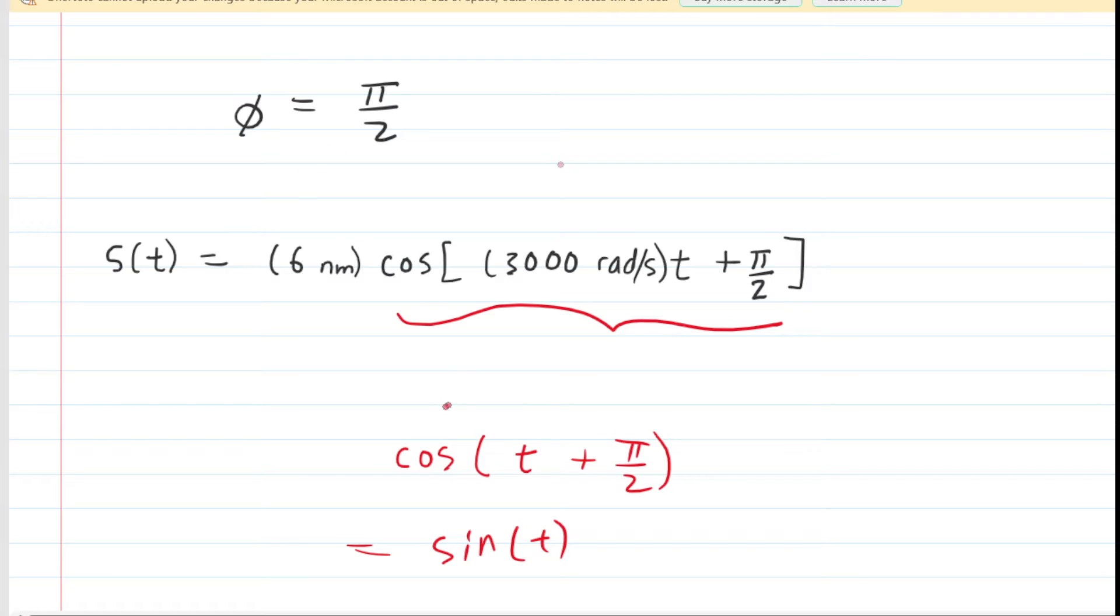So it's just going to be easier to rewrite our equation by following that identity. So that means we can rewrite this as the sine of 3,000t. We're going to drop the radians per second for now just for clarity, and we can rewrite the rest of the equation.